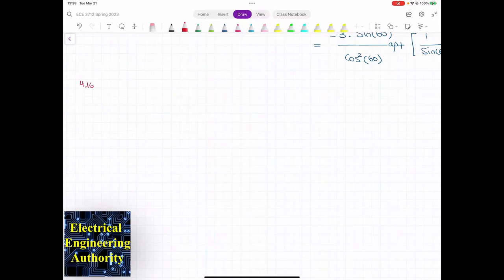In this problem we have a given field H equal to 3y squared ax. We want to find the current passing through a square in the xy plane that has one corner at the origin and the opposite corner at 2, 2, 0.